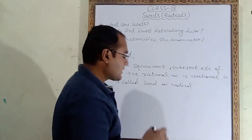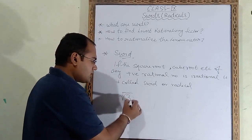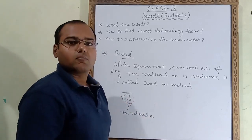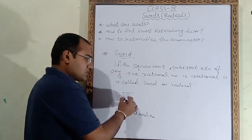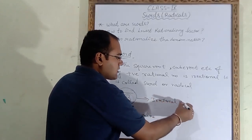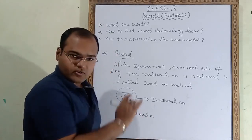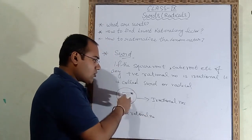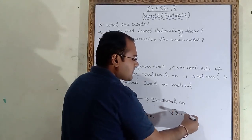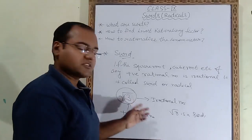Let's see one example. Suppose we take the square root of 3. This 3 is a positive rational number, and the square root of 3 is an irrational number. Both conditions are satisfied: 3 is a positive rational number, and the square root of this positive rational number is irrational. That's why we call root 3 a surd.